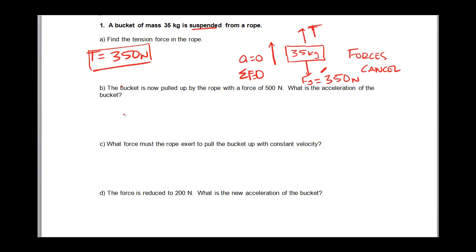Now this same bucket is going to be pulled up, so 35 kilograms is going to be pulled up by a force in the rope that is 500 newtons. And I want to find the acceleration of the bucket. I've got 500 newtons up, and we still have the force of gravity acting on it, which is 350 newtons.